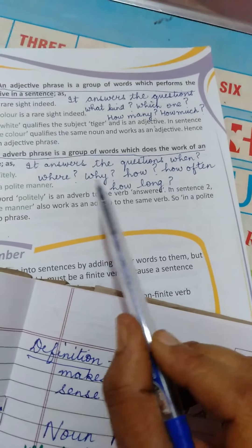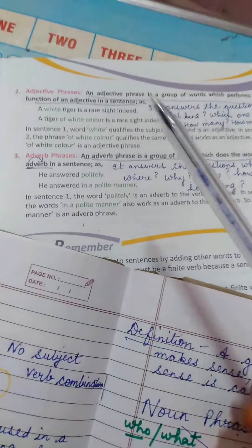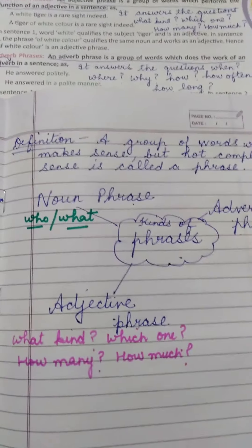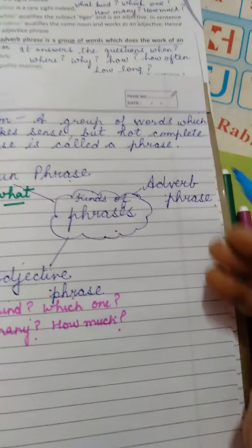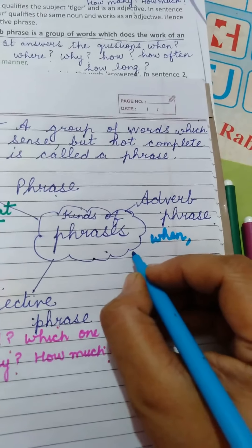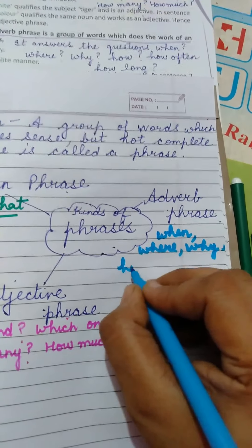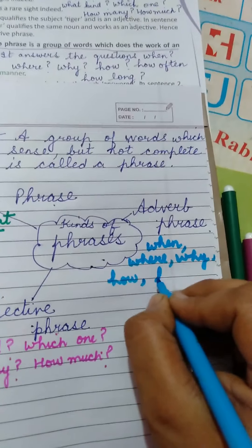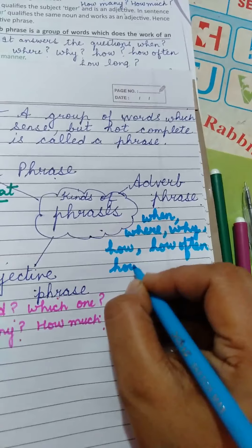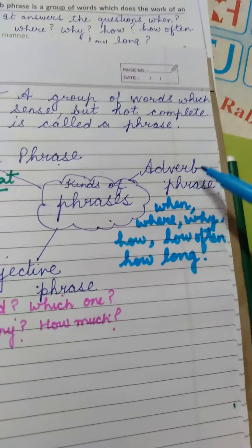If you read these things again and again, they will be in your mind very easily and you can distinguish between which is the noun phrase, adjective phrase, or adverb phrase, and you will never get confused. Write in the notebook: it answers the questions for when, where, why, how, how often, and how long. When you get the answers for these things to the verb, that is an adverb phrase.